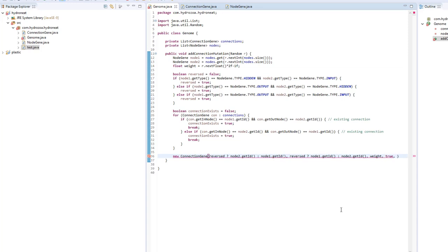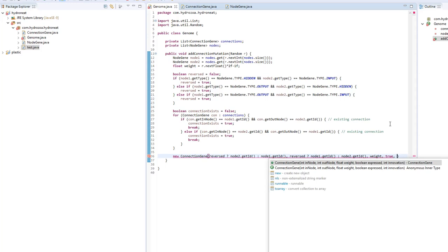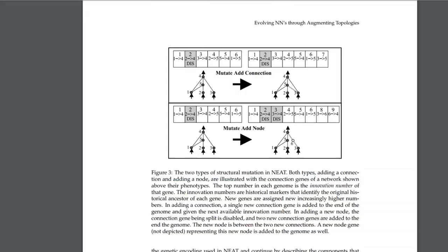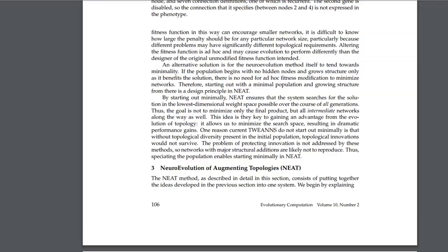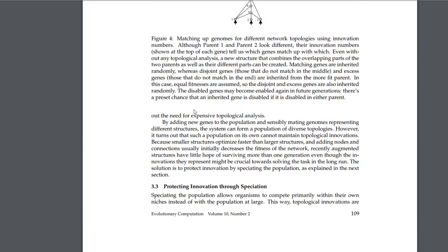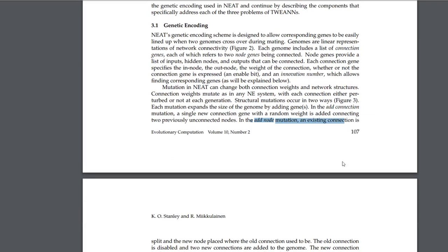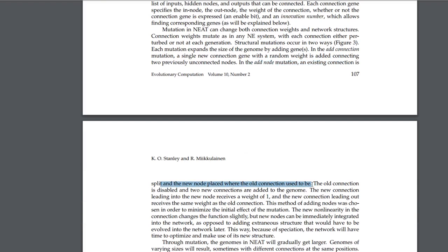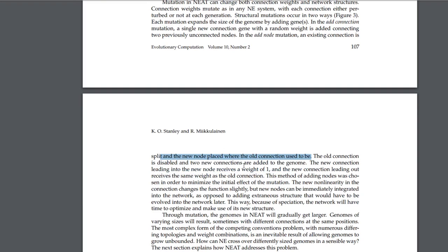Now we need the innovation number. I know the innovation number is just a number that increases with each gene, but I'm not sure yet how we're going to keep track of it. Let's keep pushing forward. In the add-node mutation, an existing connection is split and the new node is placed where the old connection used to be. The old connection is disabled and two new connections are added — the incoming connection gets a weight of 1, and the outgoing gets the same weight as the old connection.